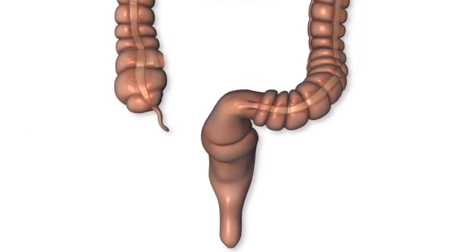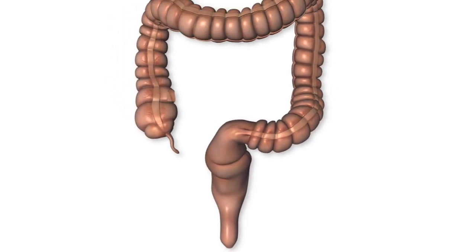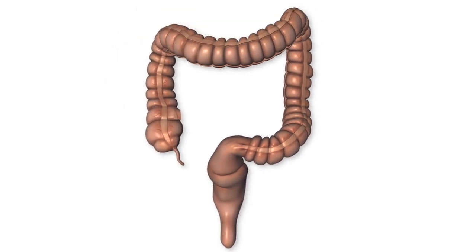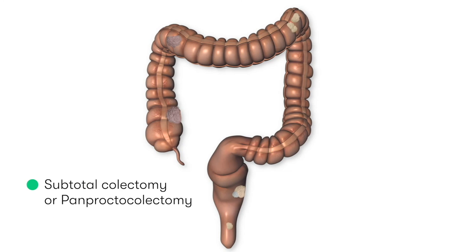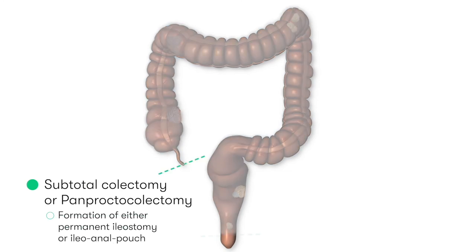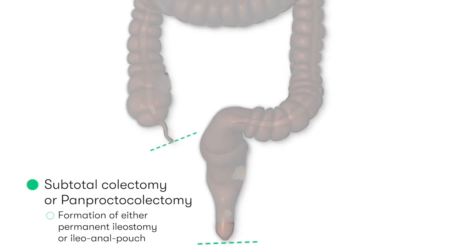In those patients who have multiple or synchronous tumours, which is found to be the case in approximately 3–9% of cases, we'd carry out a more extensive resection of the large bowel by performing either a subtotal colectomy or a panproctocolectomy.